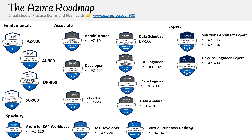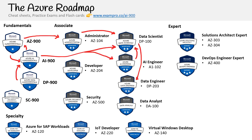Looking at our roadmap, let's use the annotation tool to see where we can go. If you already have your AZ-900, that's a great starting point before you take your AI-900. If you don't have the AZ-900, you can jump right into the AI-900, but I strongly recommend getting the AZ-900 because it gives you general foundational knowledge of how to use Azure at a fundamental level.